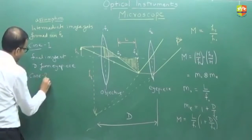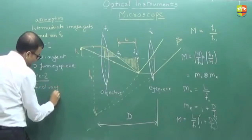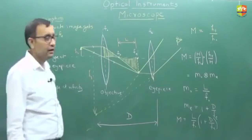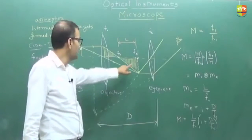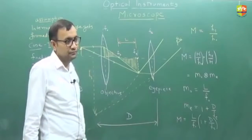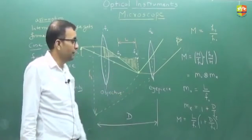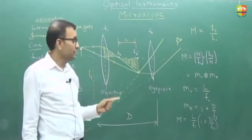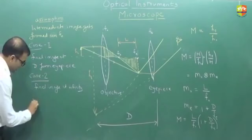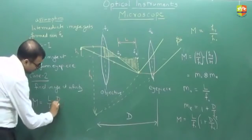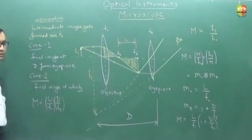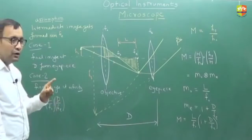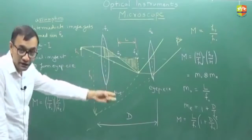Case number two: if the final image is at infinity, MO will be the same. The image will now be formed exactly at FE. ME becomes D by FE. So total magnification equals L by FO multiplied by D by FE. These are the two extreme cases — either at the least distance or maximum distance.